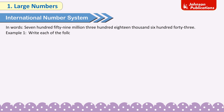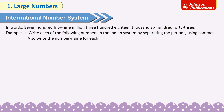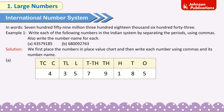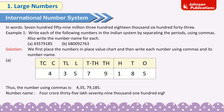Example 1: Write the following numbers in the Indian system by separating periods using commas and write the number name. A. 4,35,79,185 — placing digits in the place value chart: C=4, TL=5, L=5, TTH=7, TH=9, H=1, T=8, O=5. Number using commas: 4,35,79,185. Number name: four crore thirty-five lakh seventy-nine thousand one hundred eighty-five.